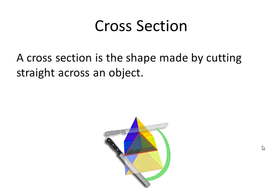A cross-section is the shape made by cutting straight across an object. So literally, imagine yourself cutting through the prism, and it would be the shape that's made at that intersection. That's what we would call a cross-section.